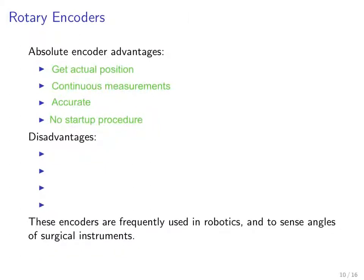The disadvantages include that you need more detectors and transmitters. You have more complex circuitry and have to figure out how to process the relative voltages coming out of the photodiodes. They're heavier than incremental encoders, more expensive, and can break somewhat easily because they have these glass discs with lots of holes in them. Nevertheless, these encoders are frequently used in robotics and to sense angles of surgical instruments.